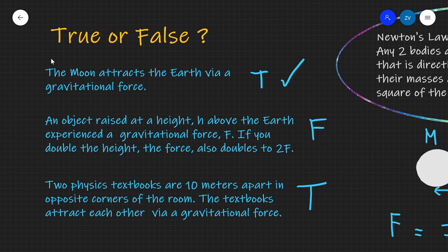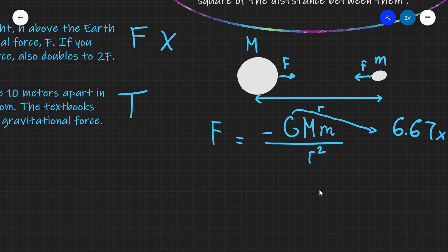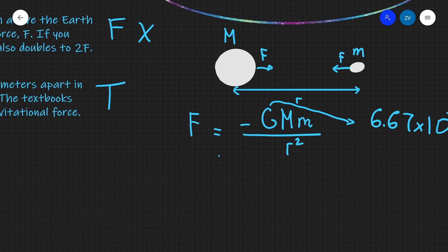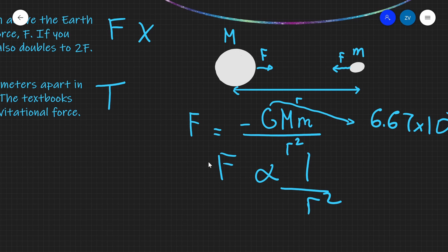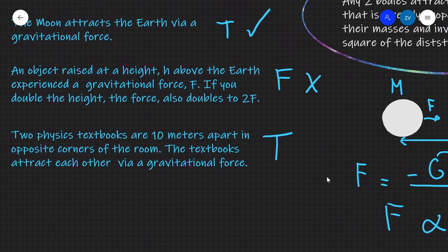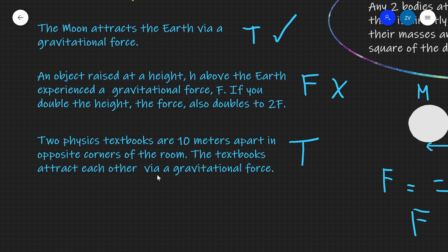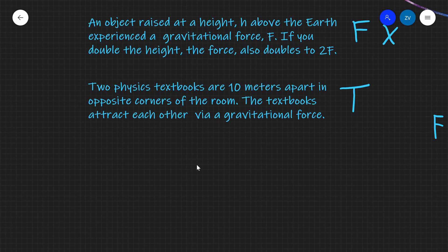The second statement — an object raised at height h above the earth experiences force F, and if you double the height the force doubles to 2F — is false. This is not a linear relationship at all. The force is proportional to the inverse of the square of the distance, so if the distance doubles, the force decreases, but not by the same factor.